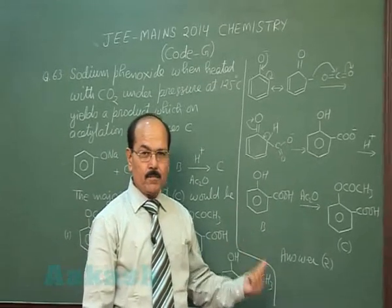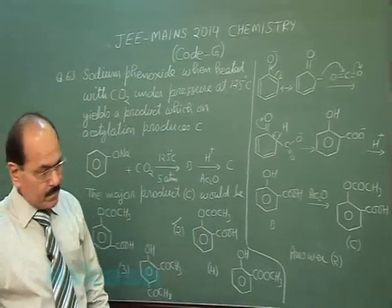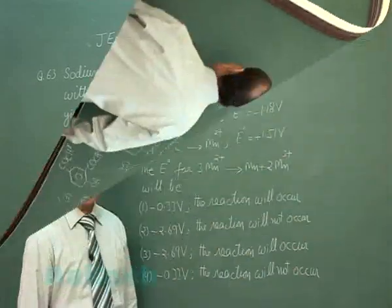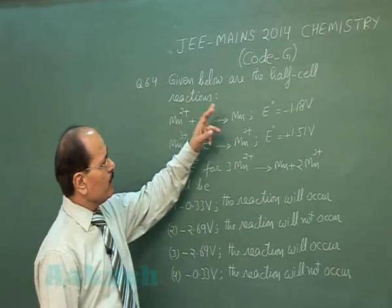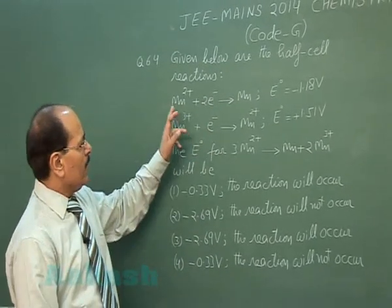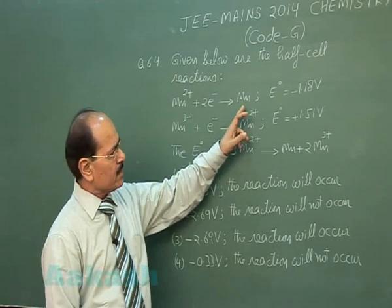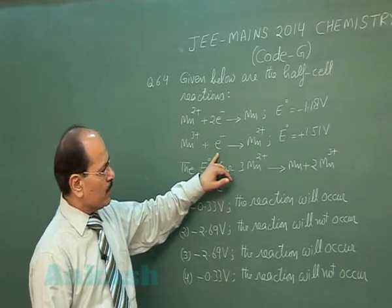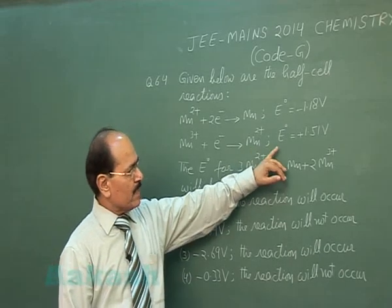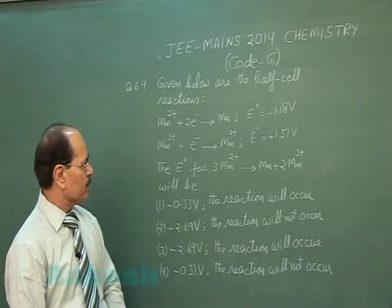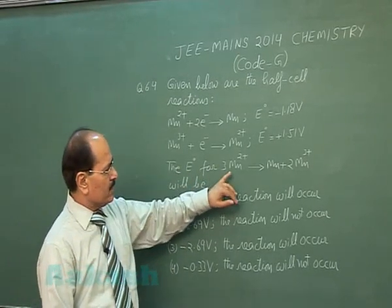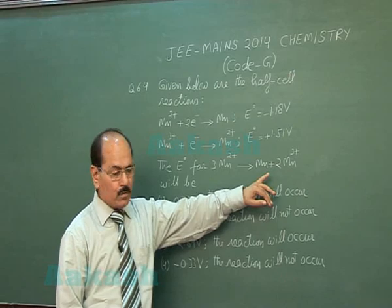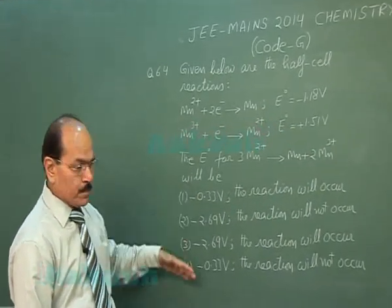Next is question 64. Given below are the half cell reactions: Mn²⁺ gains 2 electrons and gets reduced to manganese, with a standard reduction potential of minus 1.18 volts. Mn³⁺ gains 1 electron and gets reduced to Mn²⁺, with a standard reduction potential of plus 1.51 volts. We need to find E⁰ for the disproportionation reaction: 3 Mn²⁺ → Mn + 2 Mn³⁺.